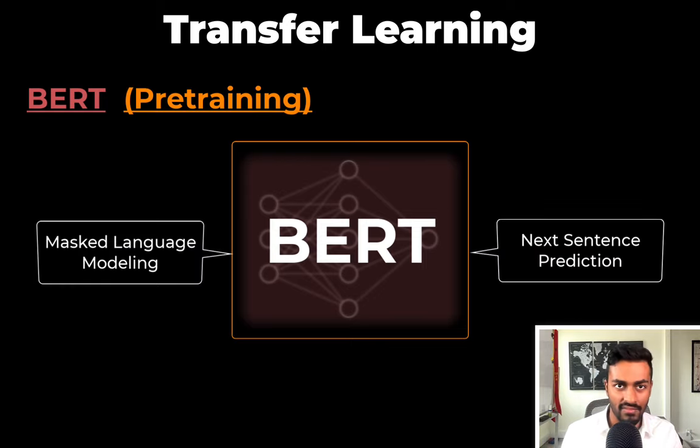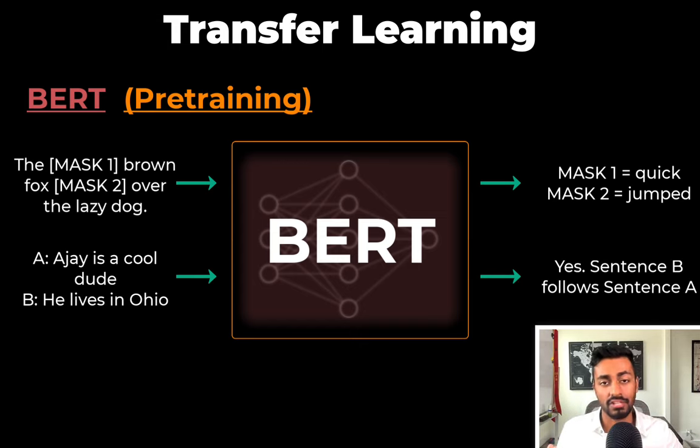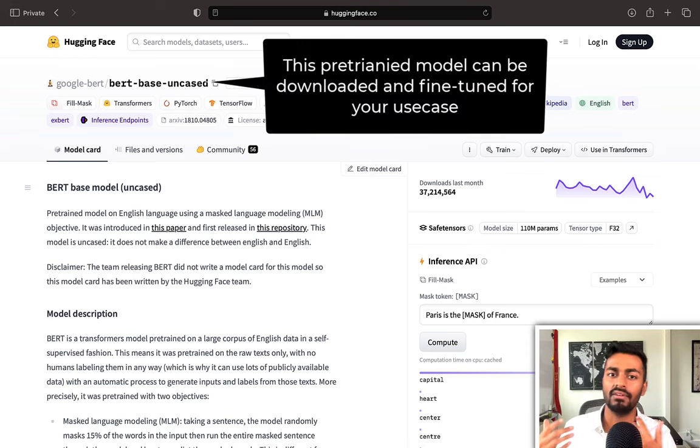So during the pre-training phase, we will take a dumb network and we'll train it on two problems, masked language modeling and next sentence prediction. So in masked language modeling, the model will take in a masked input and determine what those masks are. In next sentence prediction, the model will take in two sentences and determine whether the second sentence logically follows the first. And once it is trained on these two problems, the BERT model is said to be pre-trained. Now you as a user don't usually need to pre-train a model yourself. And these models can be downloaded online and then fine tuned for your use case.